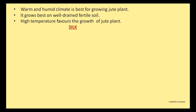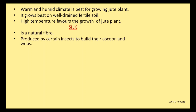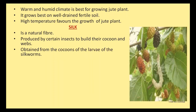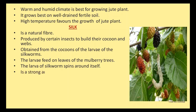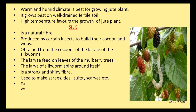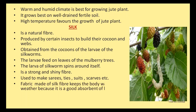Silk is a natural fiber which is produced by certain insects to build their cocoons and webs. Silk is obtained from the cocoons of the larvae of silkworms. The larvae feed on the leaves of mulberry trees. The larva of the silkworm spins around itself to form the cocoon.